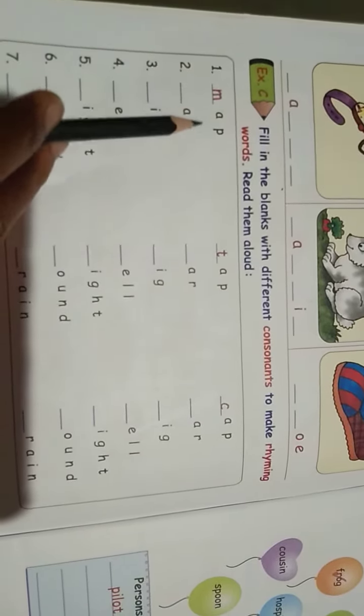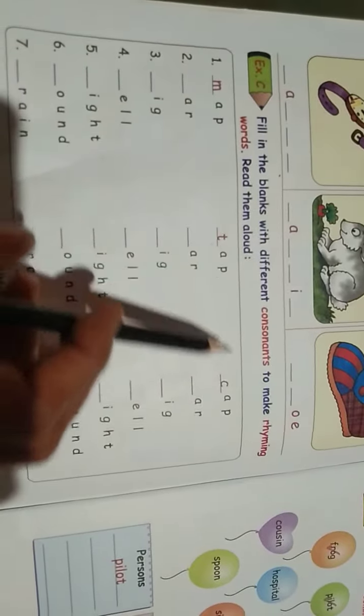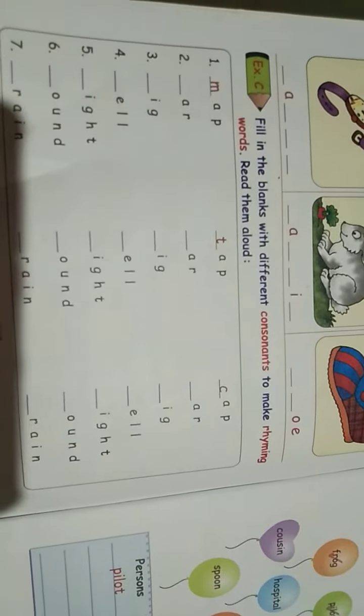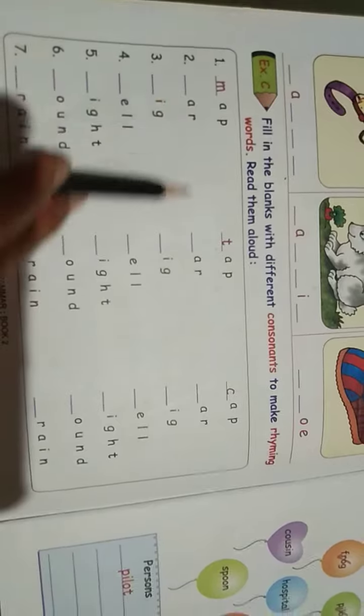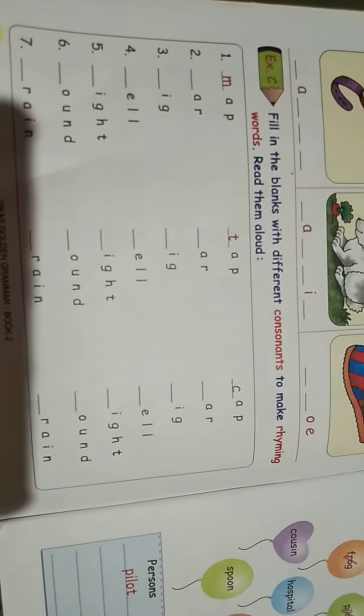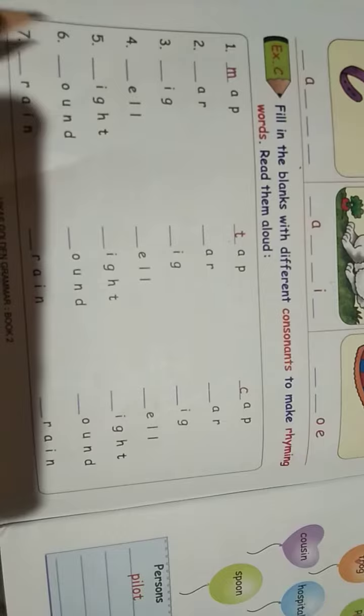Here observe, M, A, P map. T, A, P tap. And C, A, P cap. So here A R are given, which word we want, which letter we want to write here?